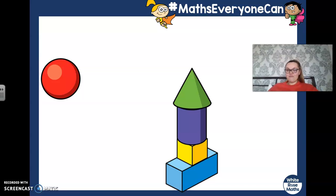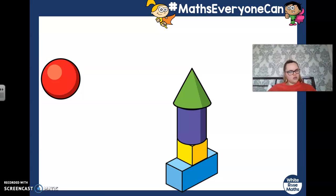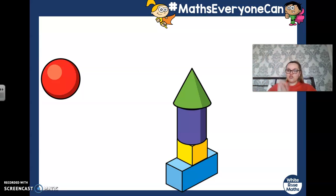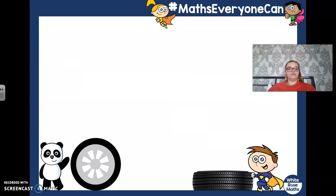I have made a rocket. I have my cuboid at the bottom, then my cube, then my cylinder, and then my cone. But the sphere can't go on top of our tower because it will just roll off. Because it has a big curved surface. Well done.